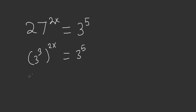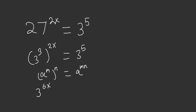By the laws of exponents, power to a power: a to the m to the n is equal to a to the m times n. So we can apply that here. 3 to the 2 times 3 gives us 3 to the 6x is equal to 3 to the 5.